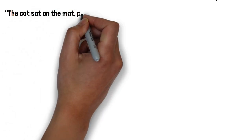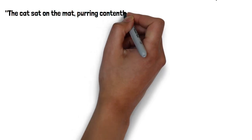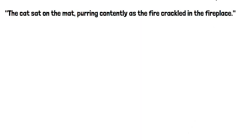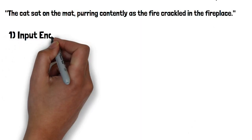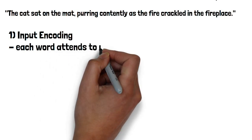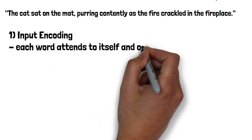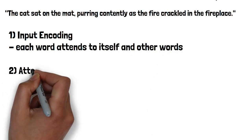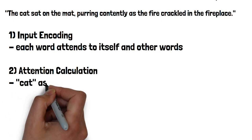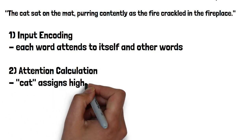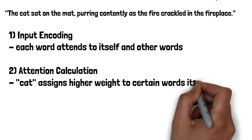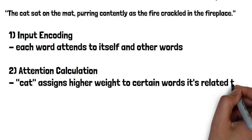Let's take the same example sentence and see how self-attention can capture long-range dependencies: 'the cat sat on the mat, purring contentedly as the fire crackled in the fireplace.' First, input encoding: each word in the sentence attends to itself and all other words, including those at a distance. Second, attention calculation: the word 'cat' assigns a high attention weight not only to itself, but also to the other words in the sentence, signifying that 'cat' relates to these other words. Similarly, each word assigns attention weights to all other words, capturing their dependencies and relationships.